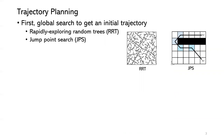Trajectory planning has two steps. First, global search to get an initial trajectory. We can use tree search like RRT, or grid search like A*. The left figure shows an RRT example, and the right figure shows an A* example.